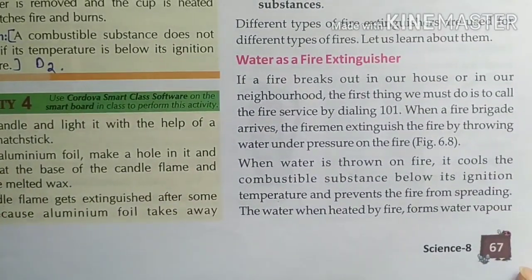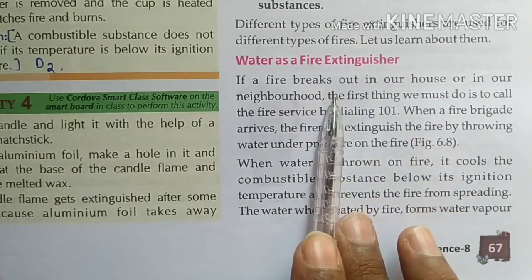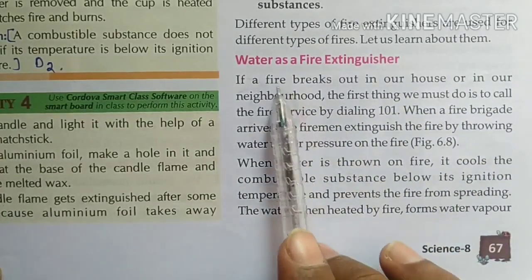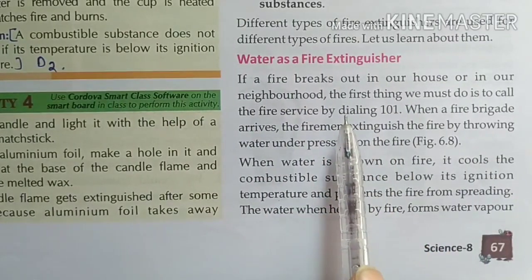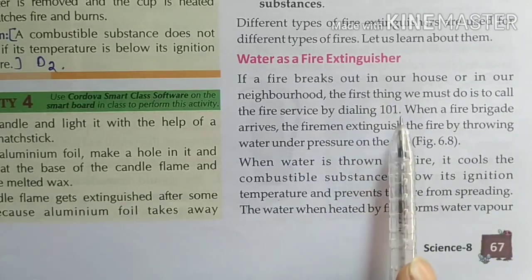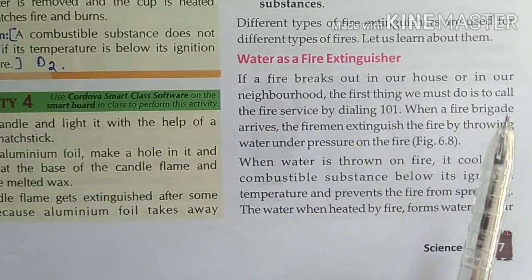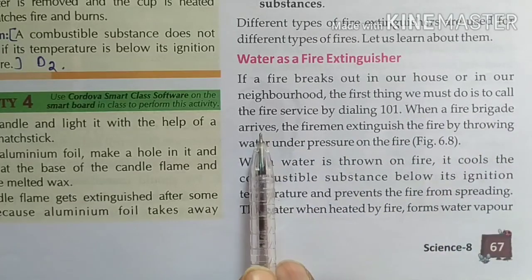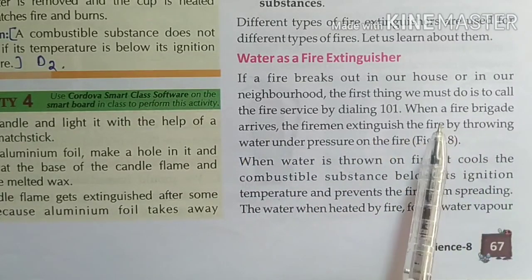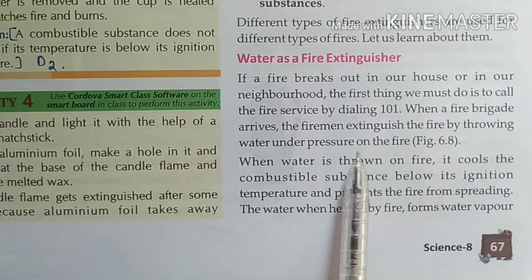If a fire breaks out in our house or neighborhood, the first thing we must do is call the fire service by dialing 101. When the fire brigade arrives, the firemen will extinguish the fire by throwing water under pressure on the fire.